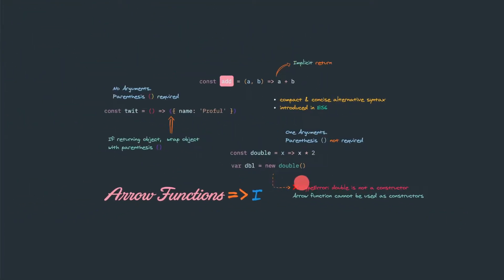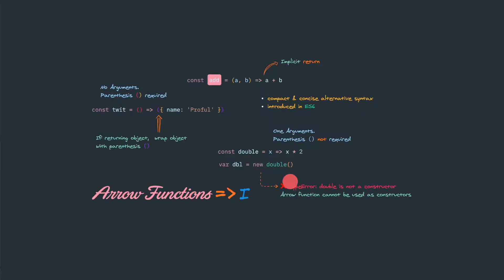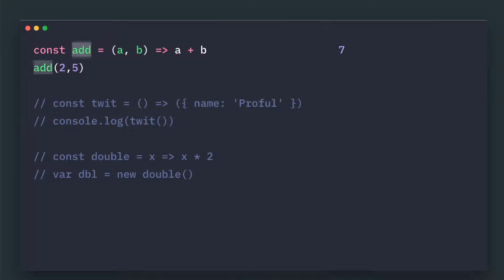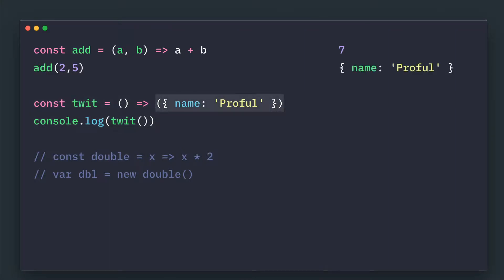Let's see that example in action. Here we define this add function. Once we call it, it will return 7. Here we define another arrow function. In this case, we are returning an object. If you try to print this function, it will return this object notation.